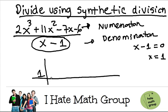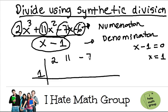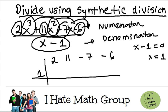The second step is to identify the coefficients you have on the numerator. You have a 2, you have an 11, you have a negative 7, and then you have a negative 6. So here I'm going to put 2, 11, negative 7, and negative 6. You can see there is a continuation — you have an order: x cubed, then x squared, then x, and then a constant. I don't have to fill in anything.